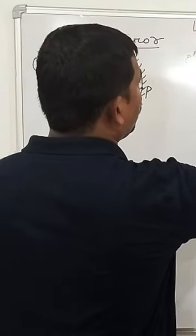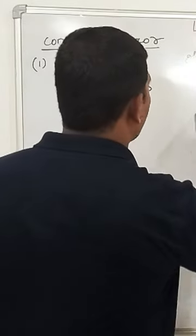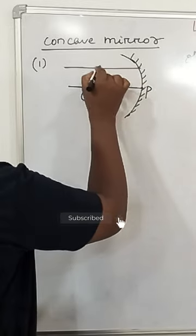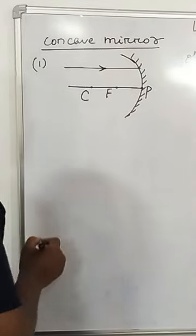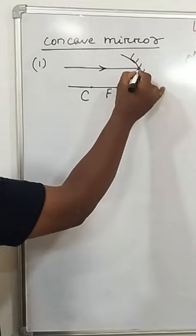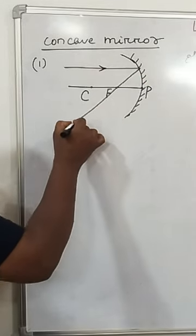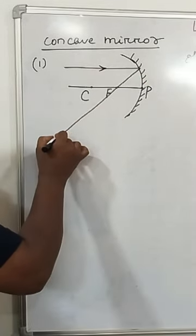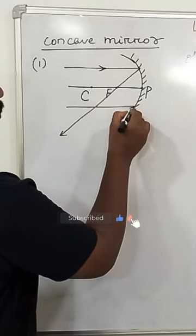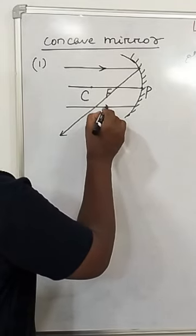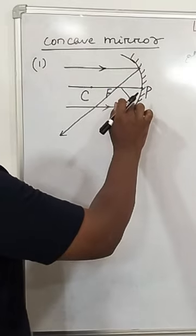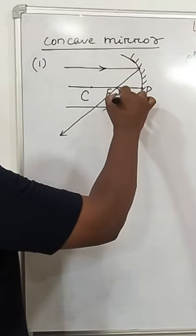Object at infinity. A ray moving parallel to the principal axis from infinity, after reflection, passes through focus. Similarly, on the downside also, a ray moving parallel to the principal axis, after reflection, passes through focus.